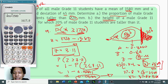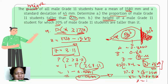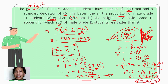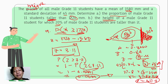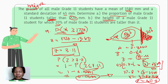So x equals 37.8 plus 1580, which gives us 1617.8. Therefore, the height for which 20% of male Grade 11 students are taller is 1617.8 millimeters. That is how we convert normal scores into z-scores.